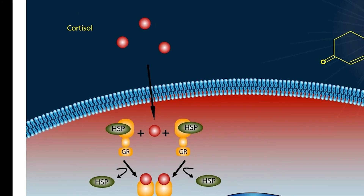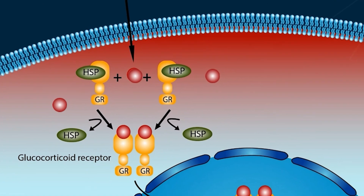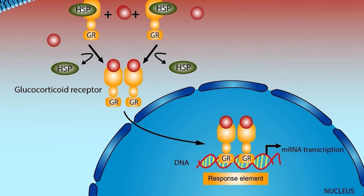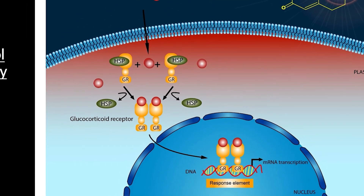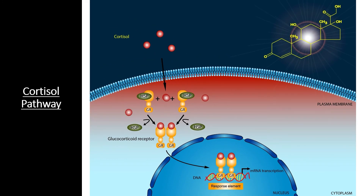Looking at the cortisol signaling pathway, you'll notice something interesting: the receptors for cortisol actually exist in the cytosol instead of on the cell membrane. However, since cortisol is a lipid-based steroid hormone, it can easily pass through the cell membrane — as is true of other lipid-based hormones. After cortisol binds to its receptor protein, the entire cortisol-receptor complex enters the nucleus and begins transcribing certain genes, making this one of the simplest pathways we've covered.